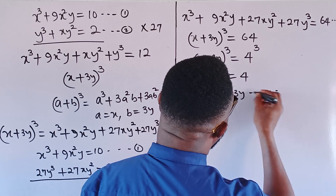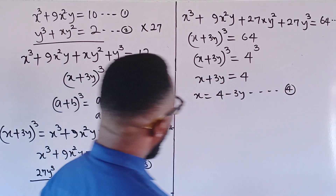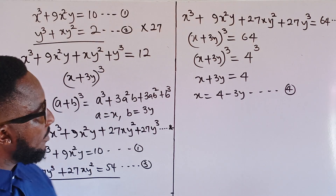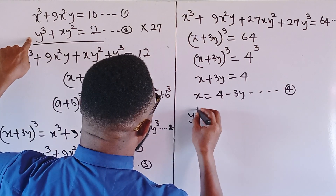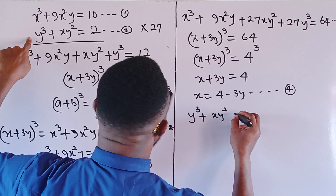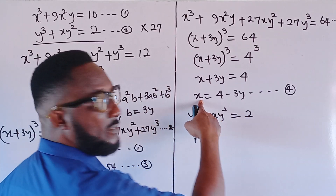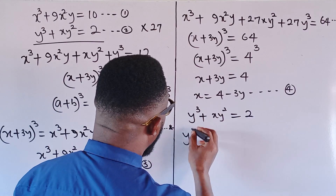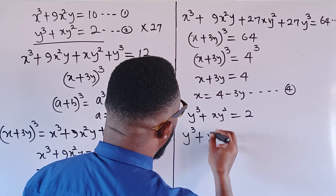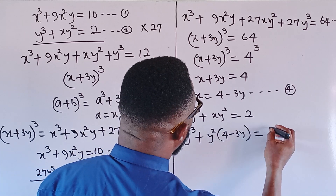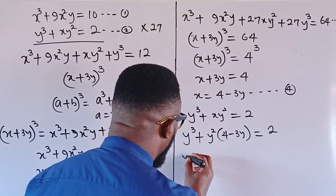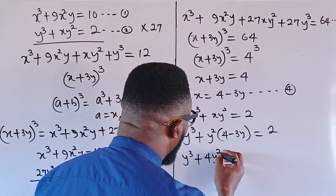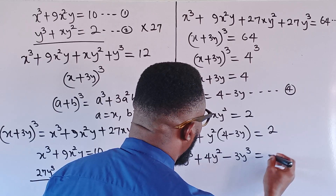We've done well. The next thing I shall do is substitute equation 4 into equation 2. Equation 2 is y³ + xy² = 2, so we plug in x = 4 − 3y. I'm going to have y³ plus y²(4 − 3y) = 2. Distributing y² through the parentheses gives y³ + 4y² − 3y³ = 2.